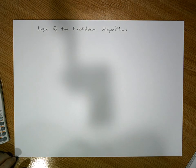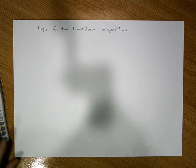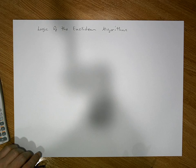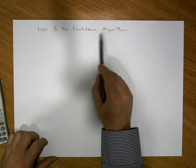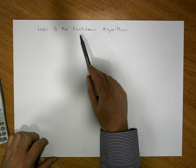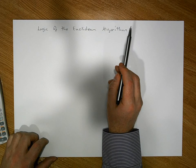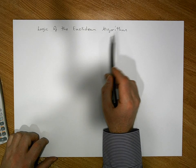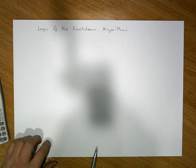Hi guys, this is Jonathan Lambert with the Mathematics Development and Support Service at the National College of Ireland. This short video is hopefully going to demystify the inner workings of the Euclidean algorithm and why, when we apply the Euclidean algorithm, we get the greatest common divisor of two numbers. This video is going to deal with the logic behind the Euclidean algorithm.